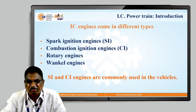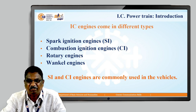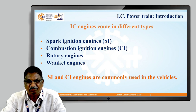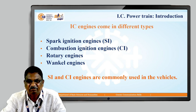IC engines come in different types: spark ignition engines, called SI; compression ignition engines, called CI; rotary engines; and Wankel engines. Mostly SI and CI engines are commonly used in vehicles.